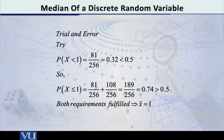Now see, we have got 0.74. Therefore, both of the conditions are fulfilled, and therefore we say that the median of this particular binomial distribution is equal to 1.